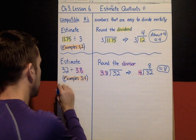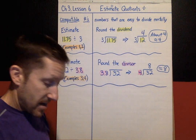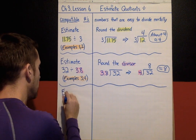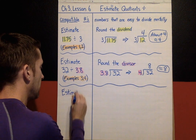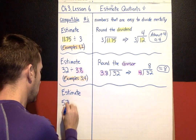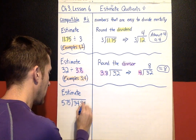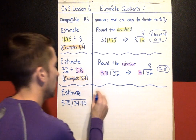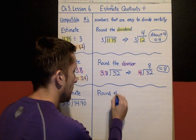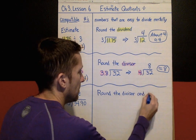Now the last example. We've looked at rounding the dividend and rounding the divisor — you might be able to guess what's next. This estimate is where we look at rounding both the dividend and the divisor. Estimate the quotient of 34.90 divided by 5.75, and this time we are going to round both the divisor and the dividend.